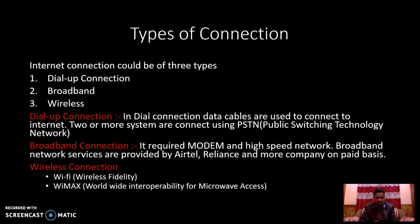Broadband connection requires a modem to connect the system, and the major requirement here is a high-speed network. Broadband network services are provided by many companies like Airtel, Jio, Reliance, and many more, but it is a paid service. Wireless network — the full form includes Wi-Fi. Wi-Fi hotspot is also present. Wi-Fi is a without-wire network; a user can use Wi-Fi modems to connect to the network and the speed may be variable because it's without wires, so sometimes speed may be higher and sometimes lower.